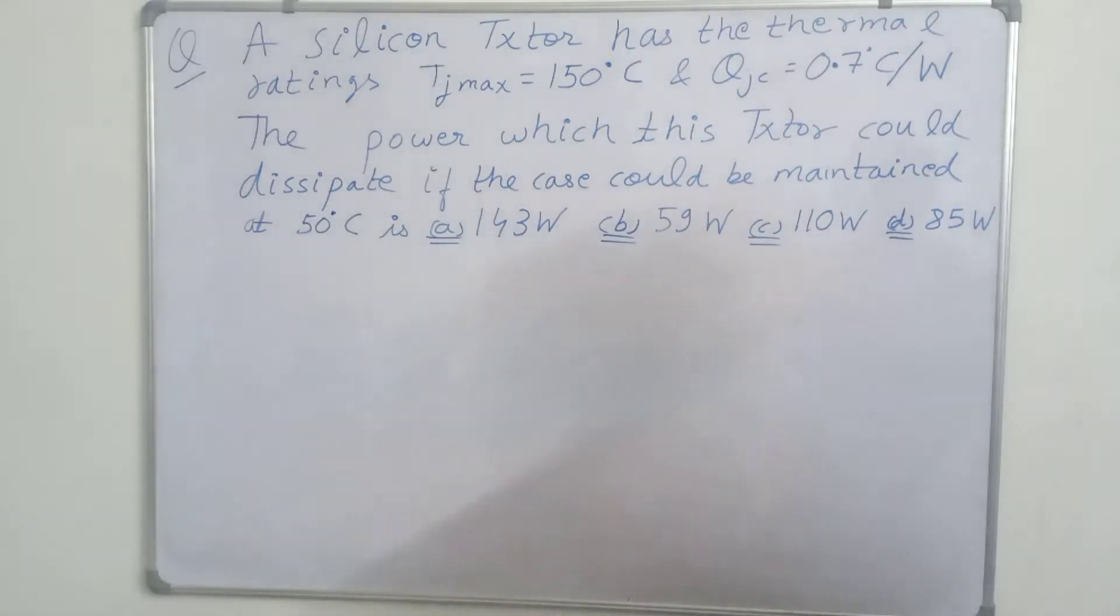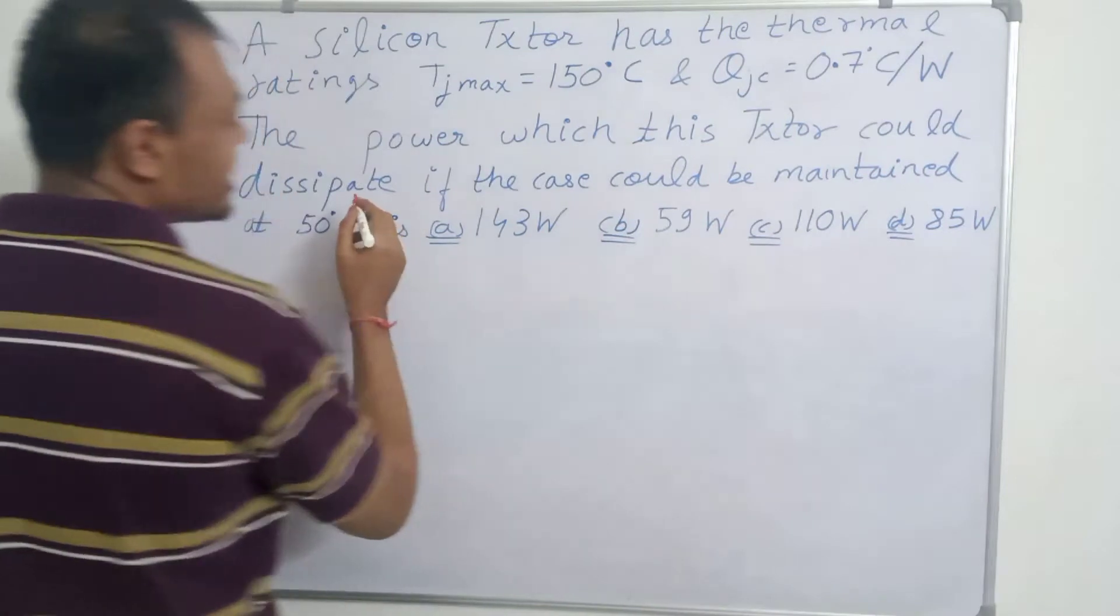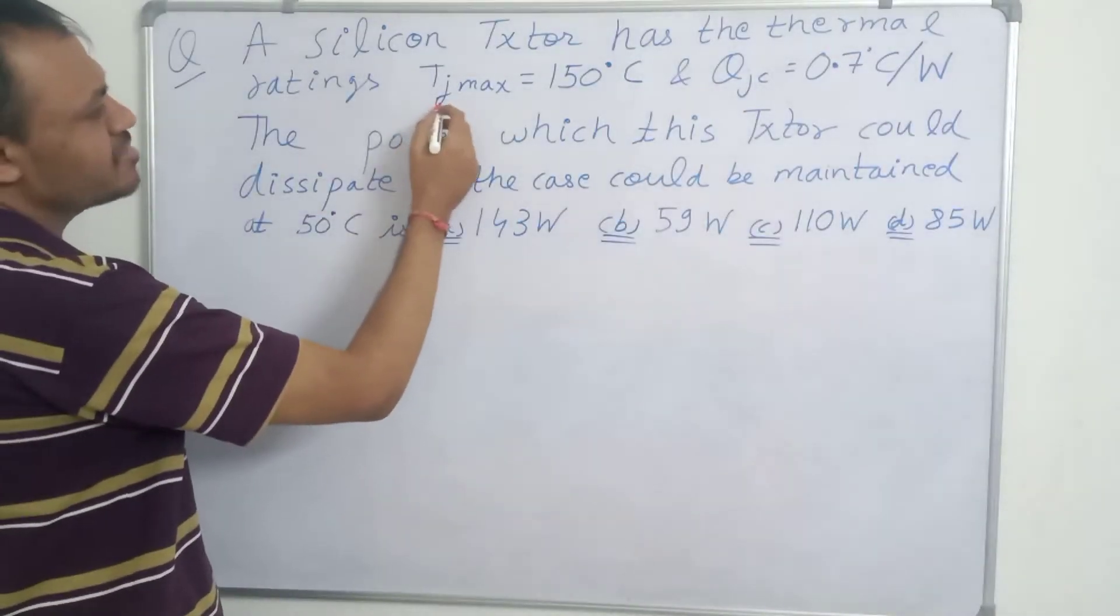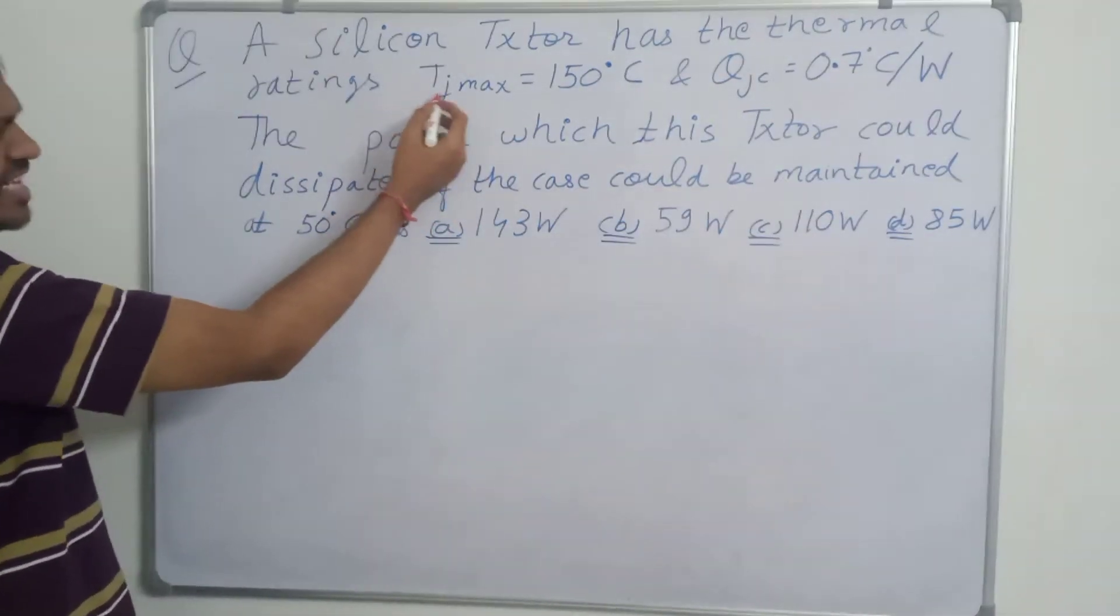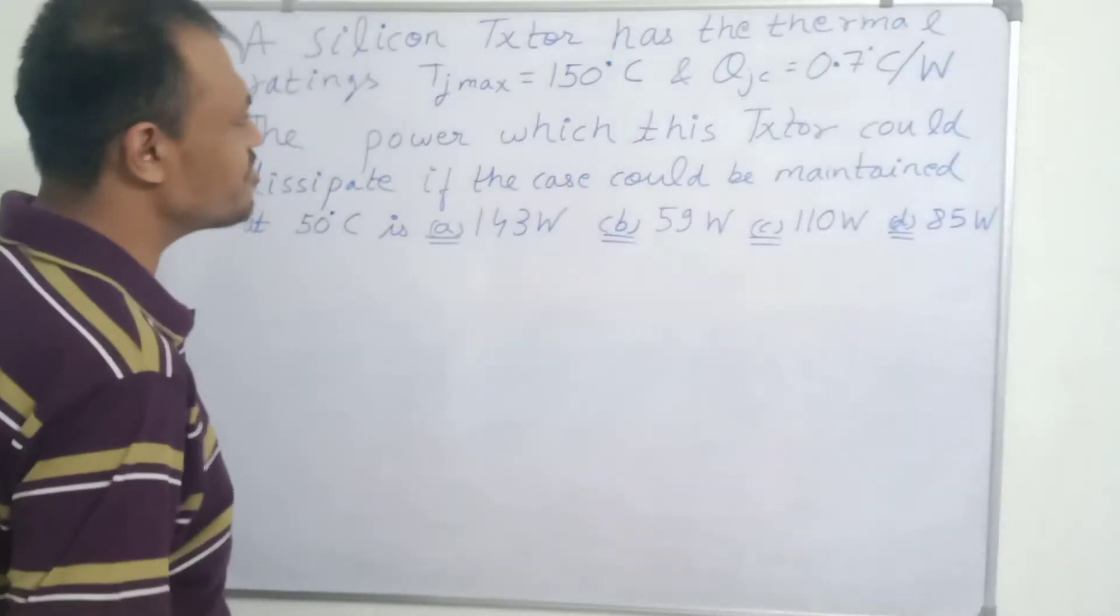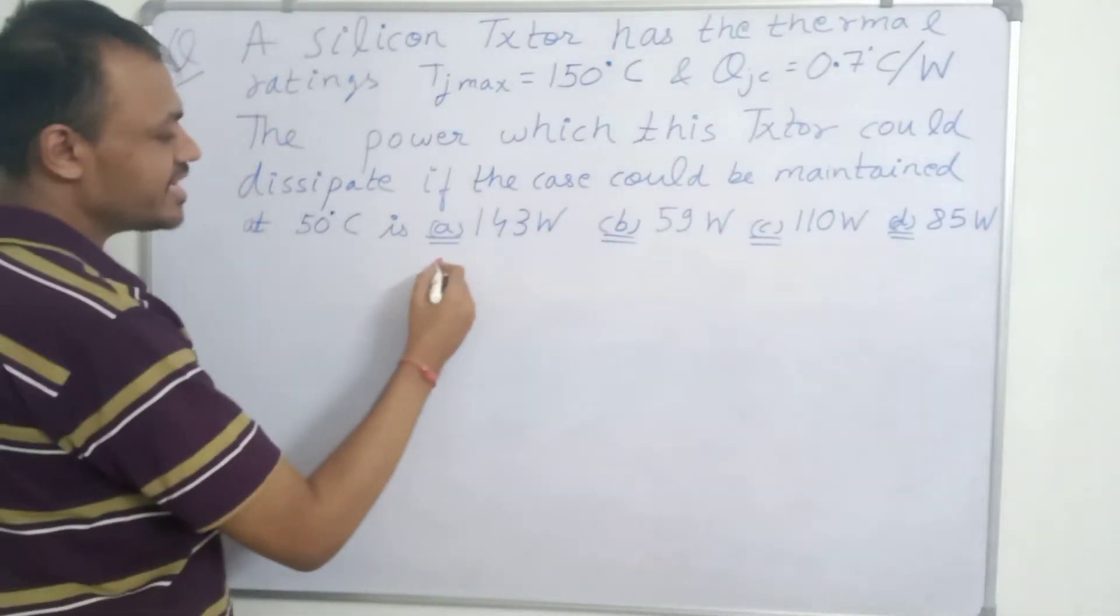In this question, it says that a silicon transistor has the thermal ratings, the maximum junction temperature, this TJmax is the maximum junction temperature, it is 150 degree Celsius.